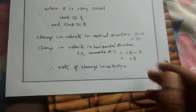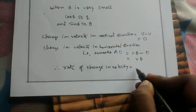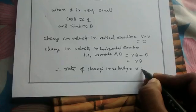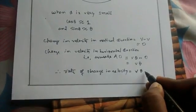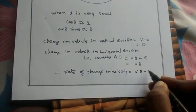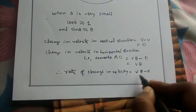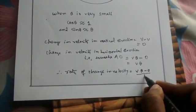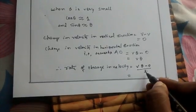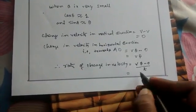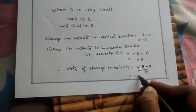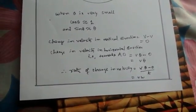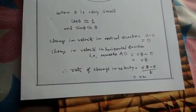So the rate of change in velocity equals v·theta divided by t. Now theta divided by t is equal to omega. So the rate of change in velocity is equal to v·omega.